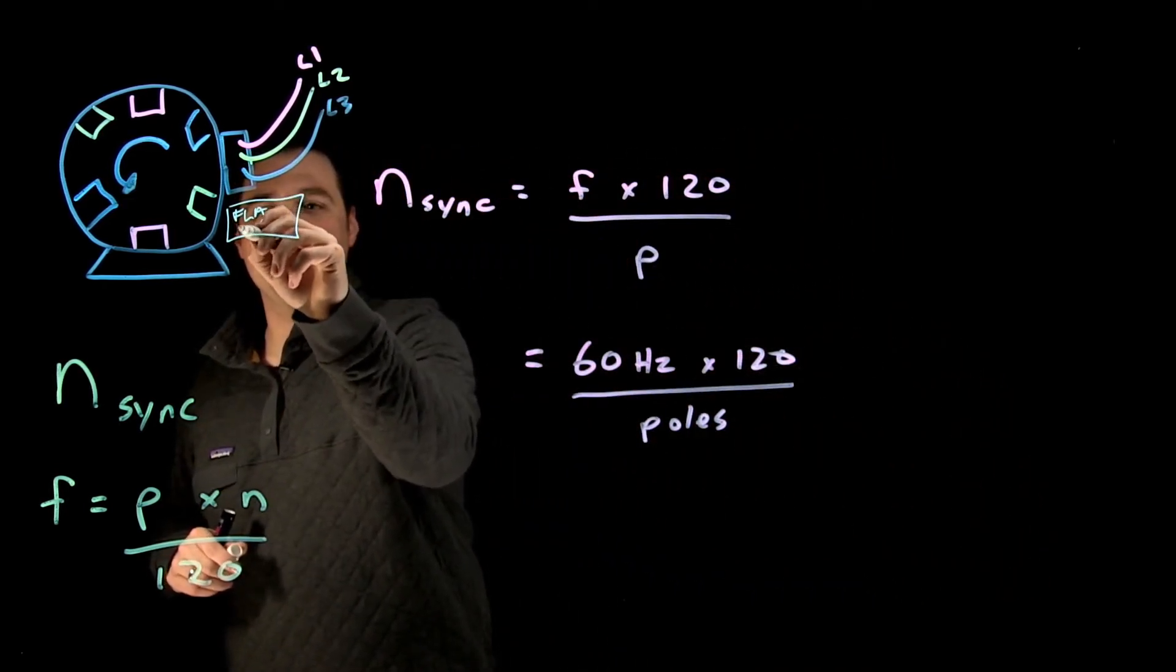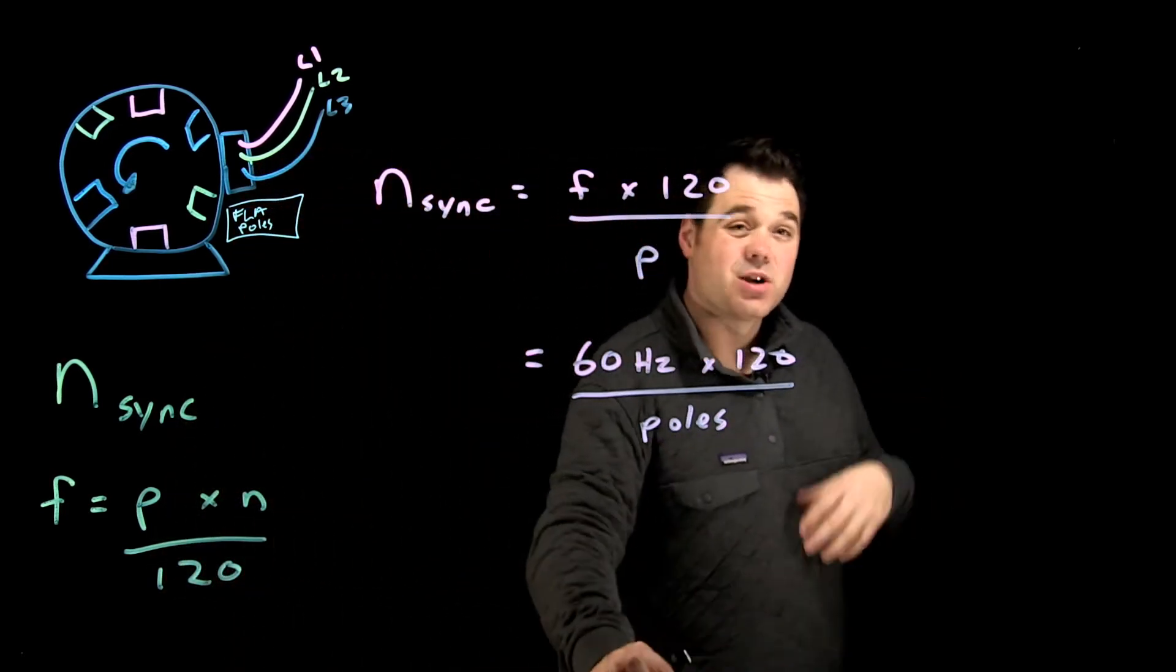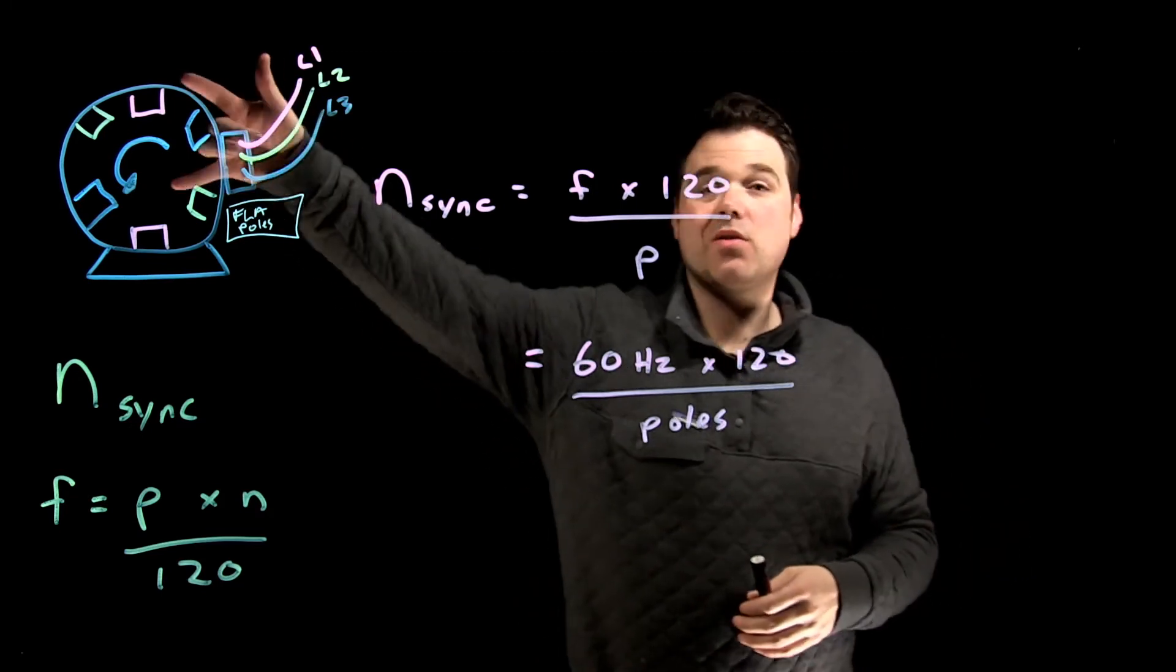It's going to say my FLA and it's going to say poles, or it's going to say two pole, four pole, something like that. It's always going to be an even number—there has to be a north and a south.